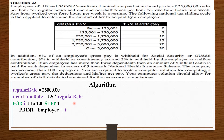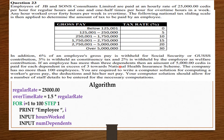To know the gross pay of the employee we must first know the number of hours the employee worked, so we ask the employee to enter the number of hours worked. To compute the national health insurance contribution, we must first know the number of dependents, so we ask the employee to enter that as well.